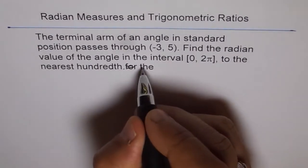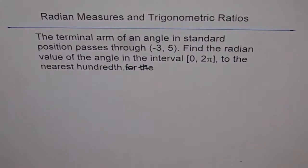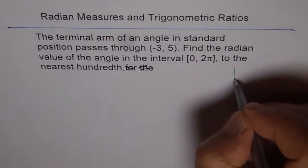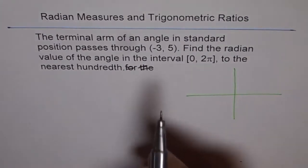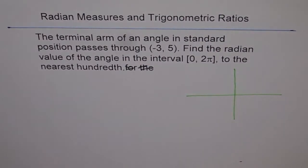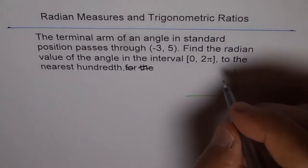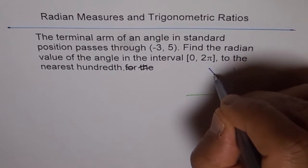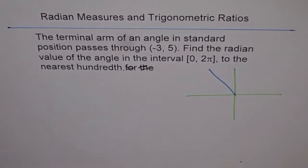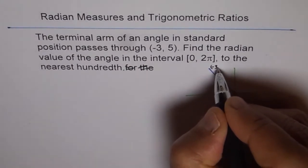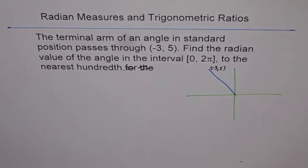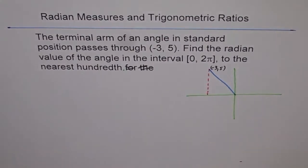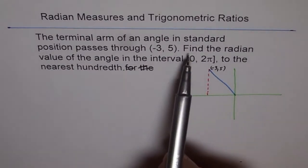For this, let's figure out where the point is on a coordinate plane. Minus 3, 5 means that the point is in quadrant 2. We can place the point minus 3, 5 in quadrant 2 and draw our triangle. Let me make a right triangle here.